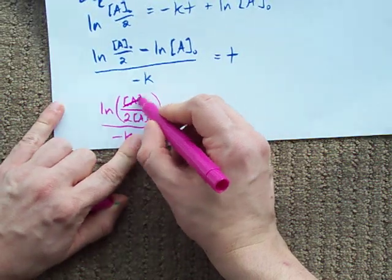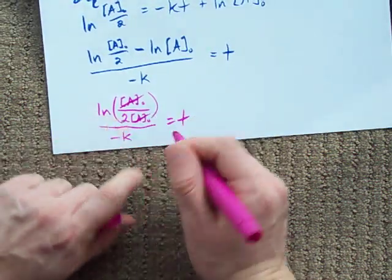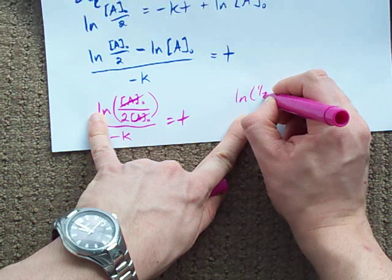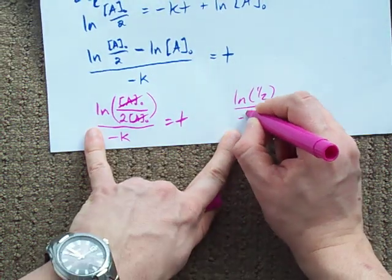Now, what you'll notice is that these two cancel. I'm left with ln of a half over negative k.